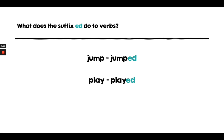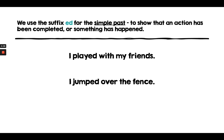So can you remember — what does the suffix ed do to words? Well, the suffix ed puts verbs into the past tense. We've used it when we've used the simple past tense, and that's to show that an action has been completed or something has happened. So for example, I played with my friends — something that I did, something that has been completed. I jumped over the fence — something that has happened.